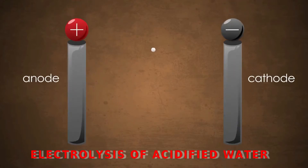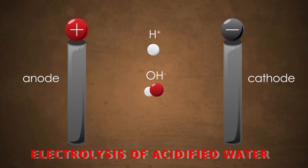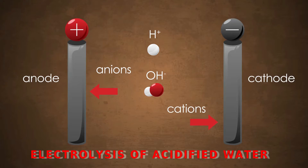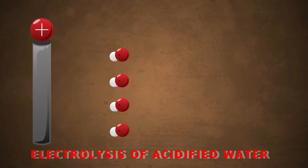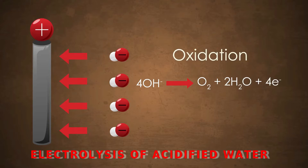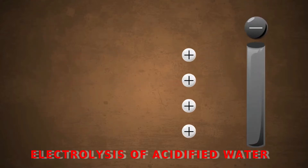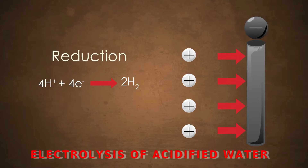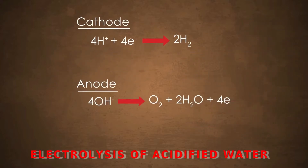H⁺ ions move towards the negative electrode — the cathode — and OH⁻ ions move towards the anode. At the anode, OH⁻ ions undergo oxidation. At the cathode, H⁺ ions undergo reduction. Four electrons are transferred in the process, producing hydrogen gas.